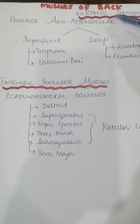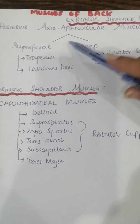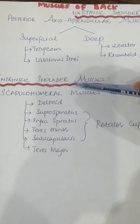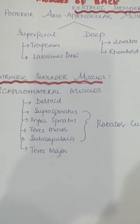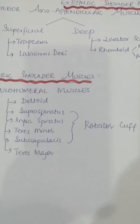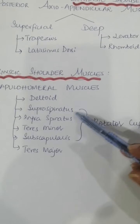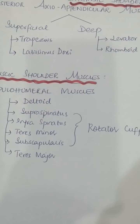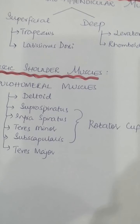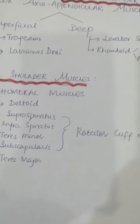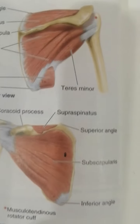We have now covered the extrinsic shoulder muscles — the superficial and deep posterior axio-appendicular muscles. Now we are going towards the intrinsic shoulder muscles. The intrinsic shoulder muscles consist of the scapulohumeral muscles, which are six in number. Among them, four muscles are termed as rotator cuff muscles. Scapulohumeral muscles are relatively short muscles that pass from the scapula to the humerus and act on the glenohumeral joint.